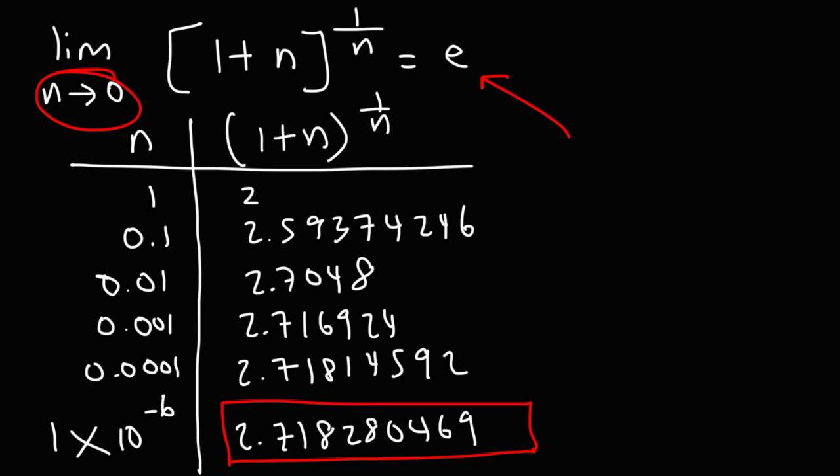But we're not quite done yet because there is another way in which you can get the value of e. It turns out that if you take the sum of 1 over n factorial from n equals 0 to infinity, this will also give you e.